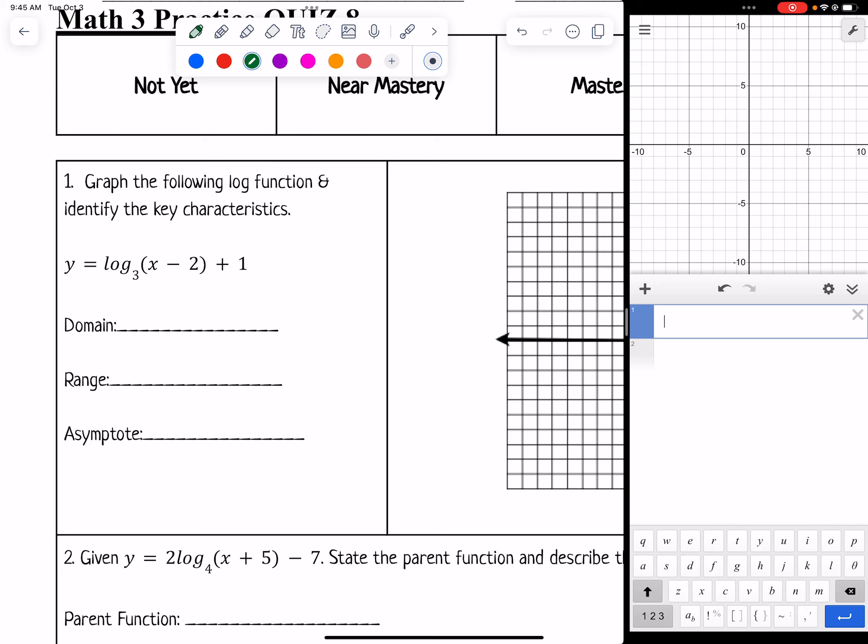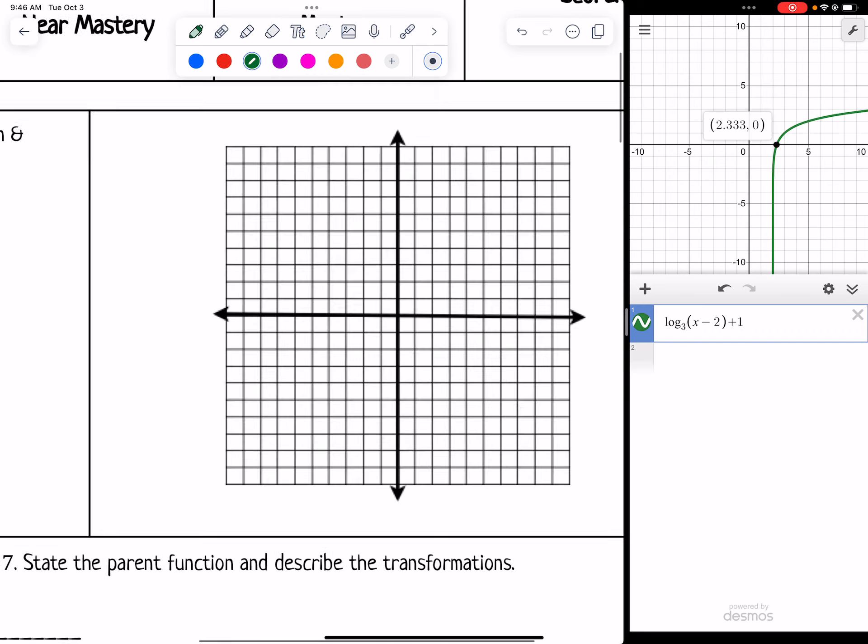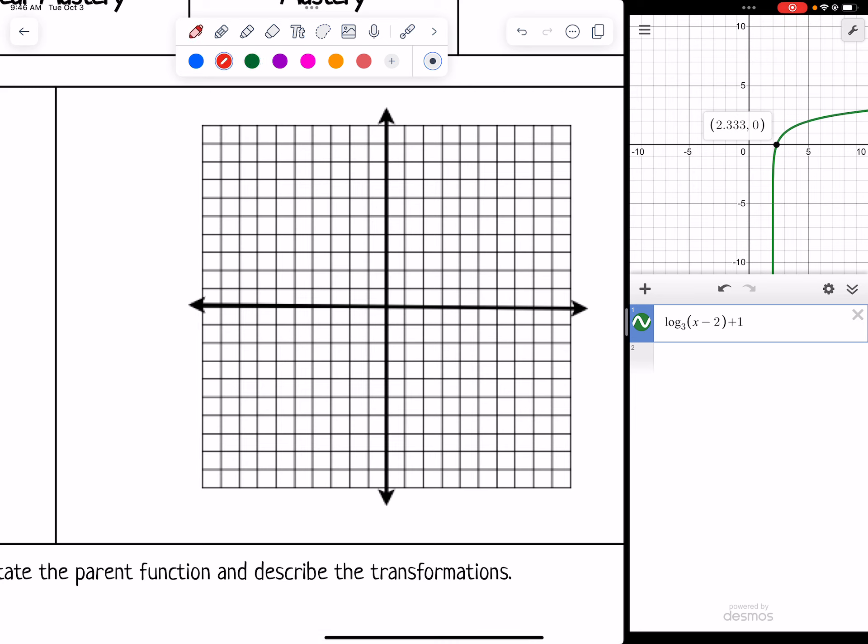In Desmos, I'm going to type in log base 3 of (x - 2) + 1. I'm going to get a few points to put on the graph, like my x-intercept right there would be a good one. It looks like it's around 2.3.